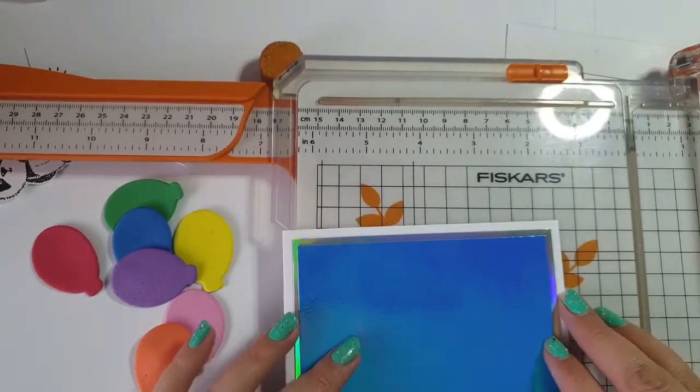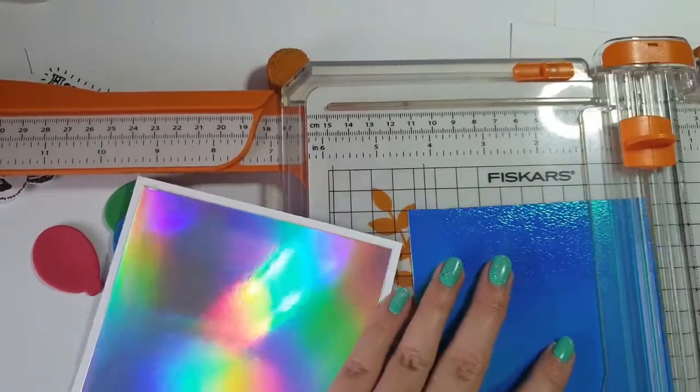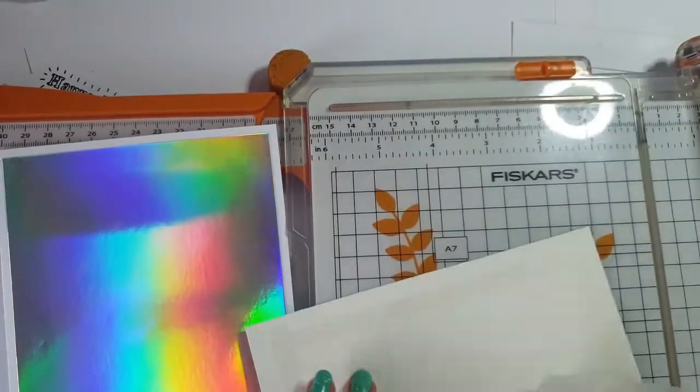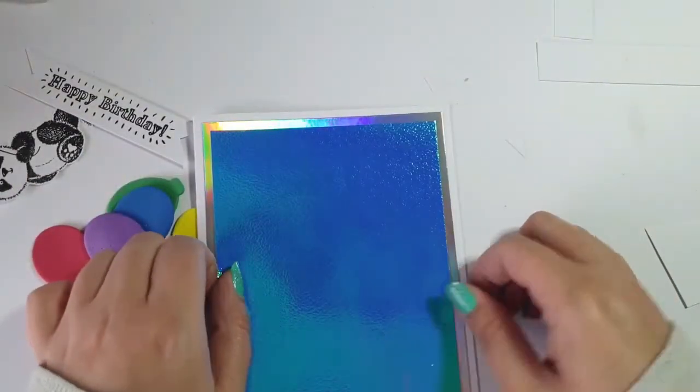I'm going to adhere the silver card down to a white card blank and then I'm putting the blue card just on top, just trimming it slightly because it's a little bit too big, just using my double-sided tape to do that.